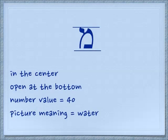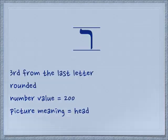The first letter we're going to cover today is the Mem. The Mem is pretty much at the center of the Aleph Bet. It's kind of rounded like a mountain, it has a little flag on top, and it has an opening at the bottom. The number value for Mem is 40. The picture meaning is water, and it just sounds like M.